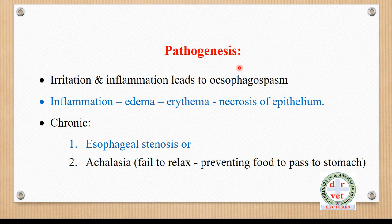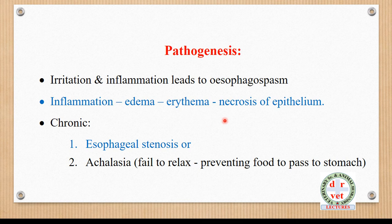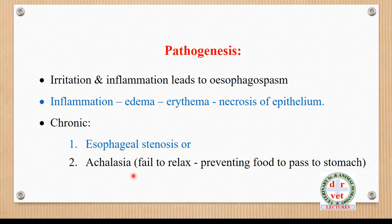In the pathogenesis of esophagitis, the causative agent causes irritation and inflammation, leading to contraction of the muscles of the esophagus called esophagospasm — a very painful condition. Inflammation and edema cause erythema, and finally there is necrosis of the epithelium. In chronic cases, there is contraction of the lumen of the esophagus called stenosis, causing difficulty in swallowing. Achalasia refers to the failure of relaxation of the esophagus, which prevents food from passing to the stomach.